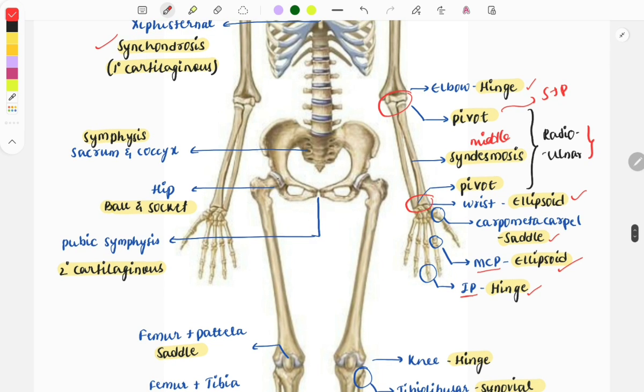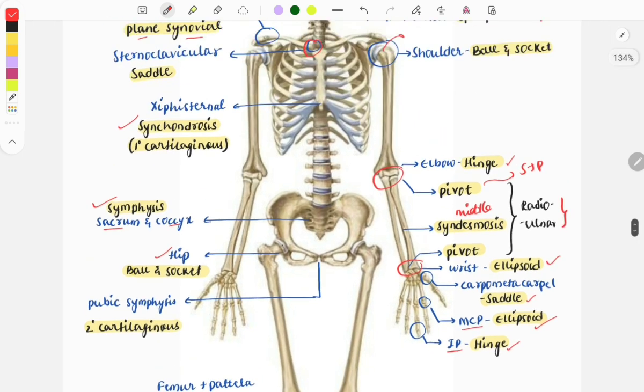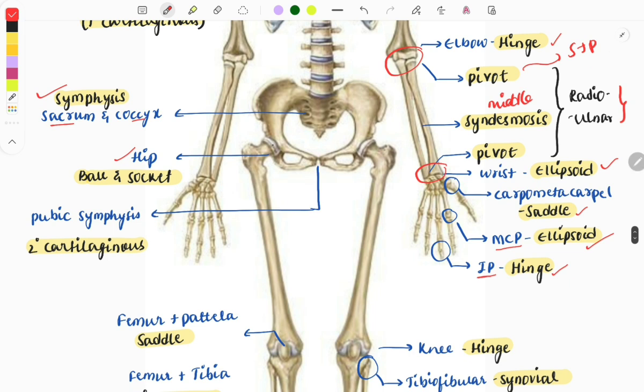The joint between the sacrum and the coccyx is symphysis. The hip joint is also a ball and socket joint, like the shoulder joint, same as the shoulder joint.